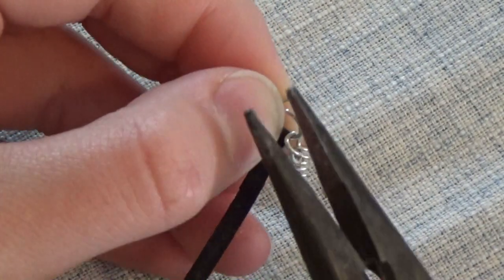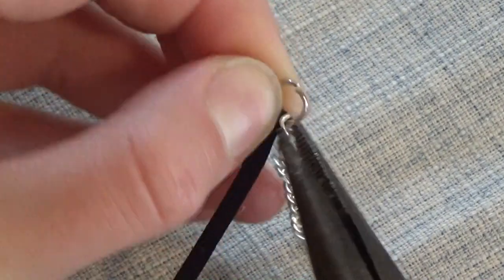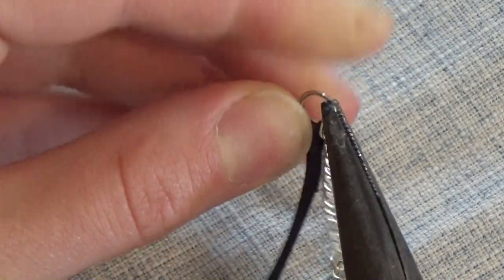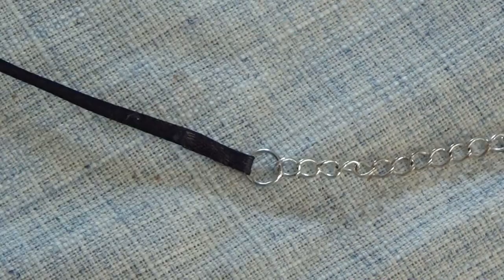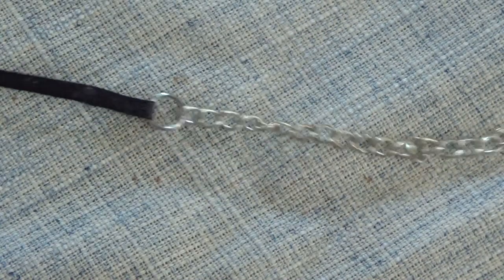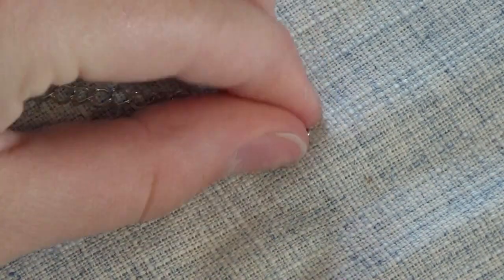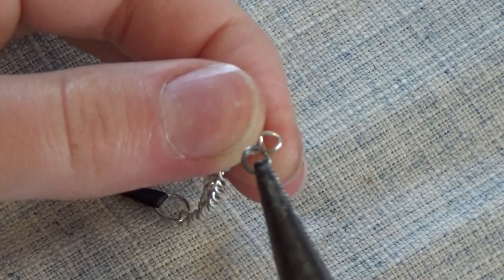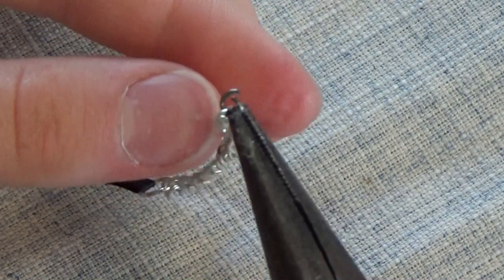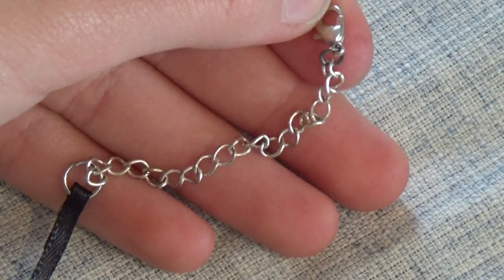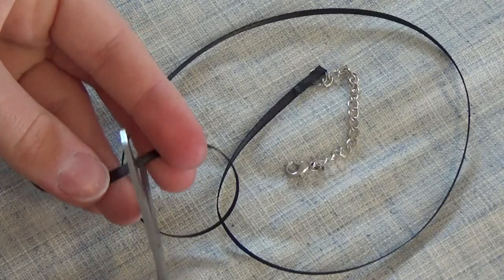Then after you close that, you can just measure out the size of the chain that you want. You only need about an inch or two. Then I put the small jump ring on the other end of the chain, followed by a lobster clasp. So it should look like this.